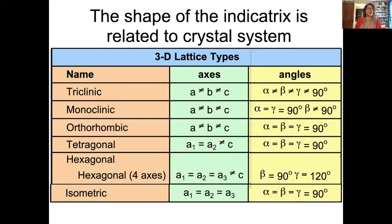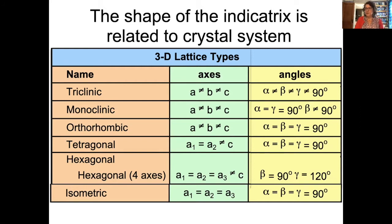The shape of the indicatrix is related to the crystal system. There are six crystal systems, defined by the lengths of their axes, the relationship of the lengths of those axes, and the relationship of the angles between them. Each one has a different relationship.